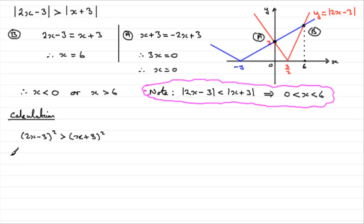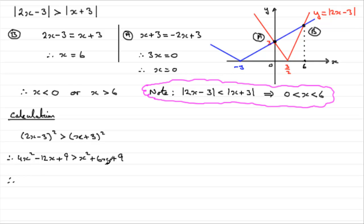Expanding the left side: 2x squared gives 4x squared, then 2 times 2x times minus 3 gives minus 12x, and minus 3 squared gives plus 9. The right side gives x squared plus 6x plus 9. Rearranging to make it greater than 0: subtracting x squared and subtracting 6x from both sides gives 3x squared minus 18x, and the 9s cancel, leaving 3x squared minus 18x greater than 0.